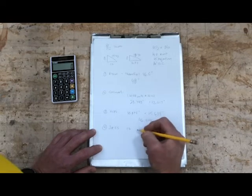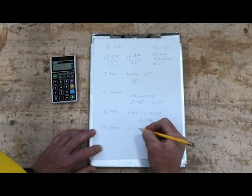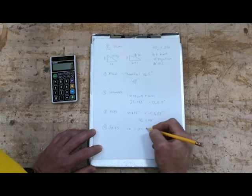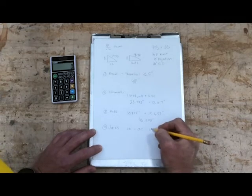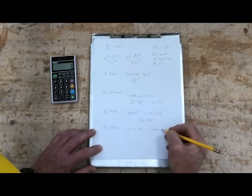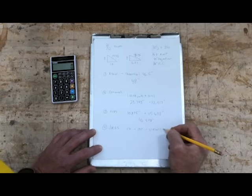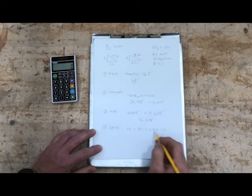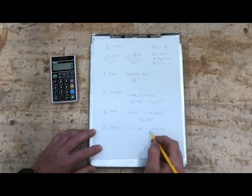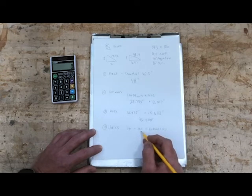One thing we need to do then is find our common difference. The common difference we find by taking our on center spacing, divide by our unit run. It's almost always going to be 12. Well, it is 12.